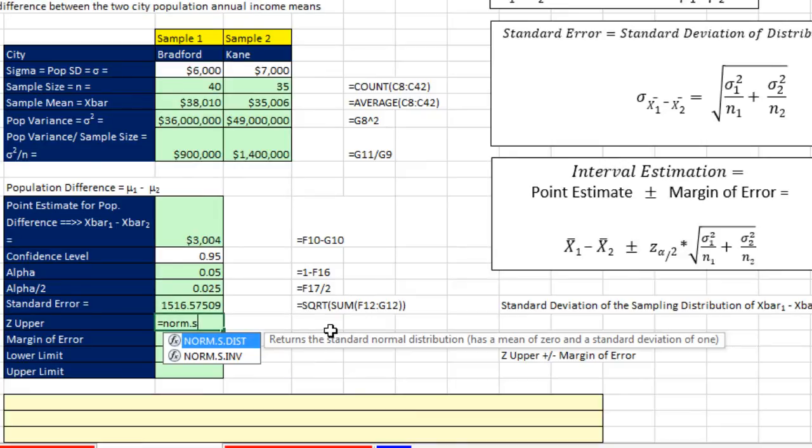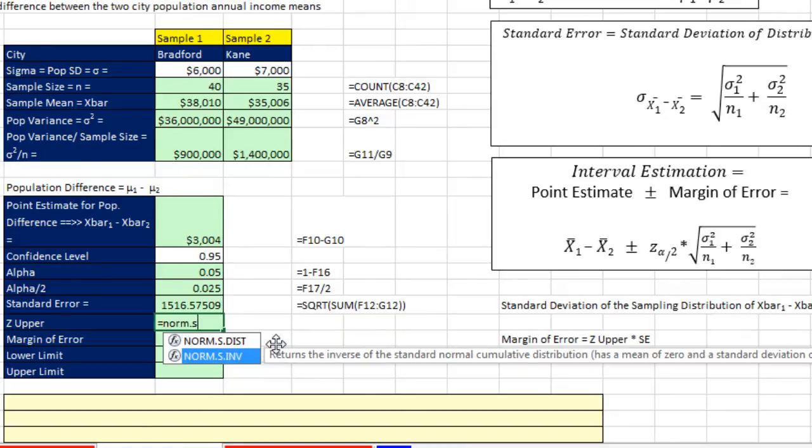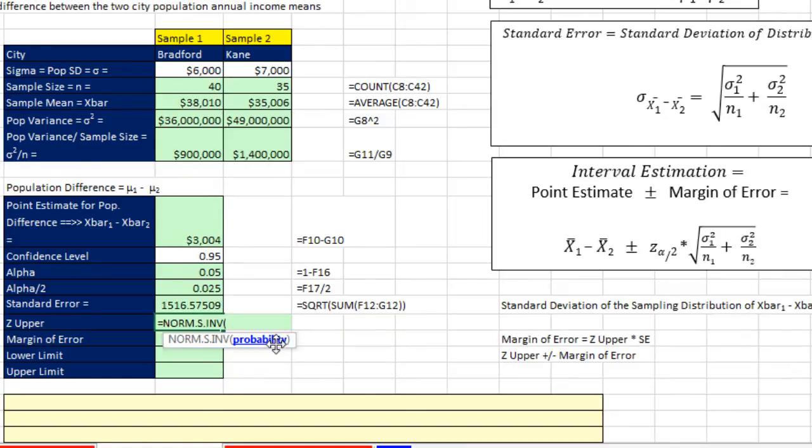Now the dist, as you remember from so many times in the class, that gives us probability. The inverses always gives us the value. So tab, the probability, well, it's not 0.025, because these functions always calculate from negative infinity up to some x. So I'm going to say 1 minus 0.025. That'll give us 97.5%. So when I close parentheses, that gives me the z on the upper end.